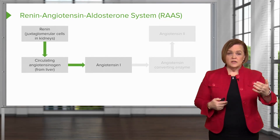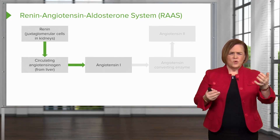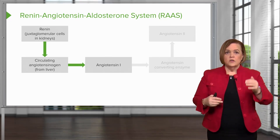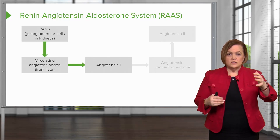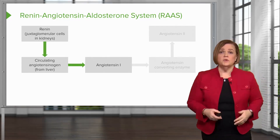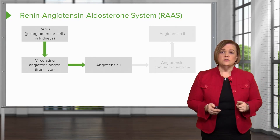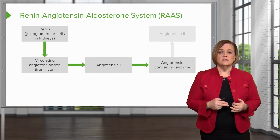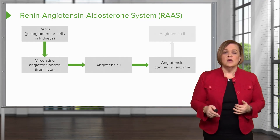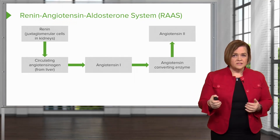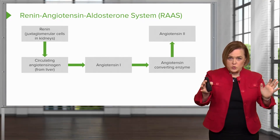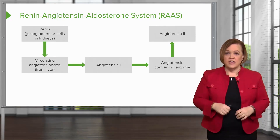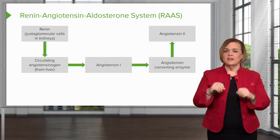So I went from renin to circulating angiotensinogen. Why did the renin appear? Because my body sensed I needed to raise my blood pressure. So renin connected to the circulating angiotensinogen and I end up with angiotensin 1. When angiotensin 1 meets ACE — angiotensin converting enzyme — you end up with angiotensin 2. This causes potent vasoconstriction and volume expansion.